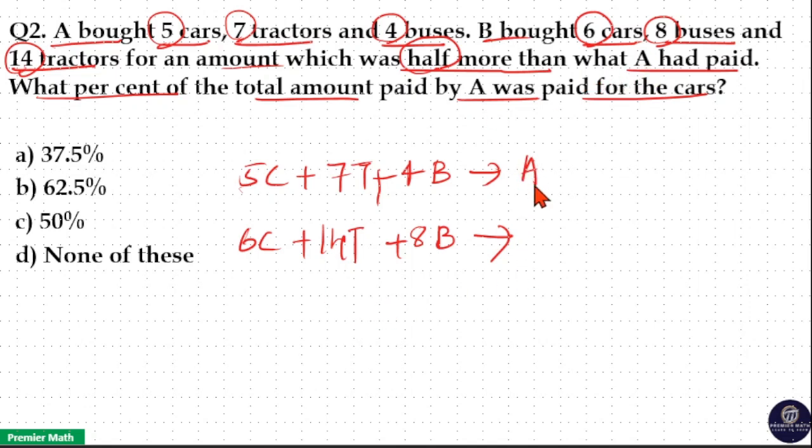A paid A amount, and B paid A by 2 more than A, which means 3 by 2 A. Now the difference between these two is equal to 3 by 2 A minus A, which is A by 2.